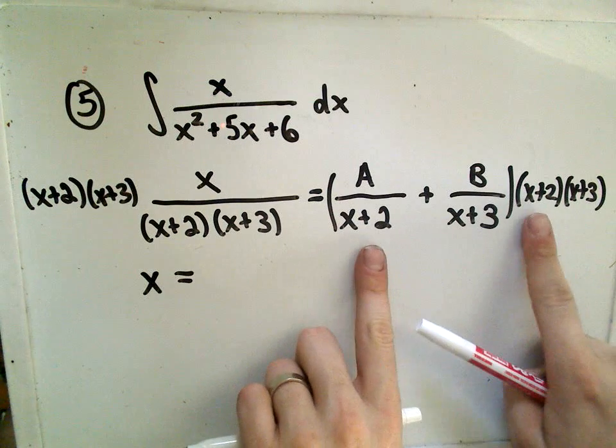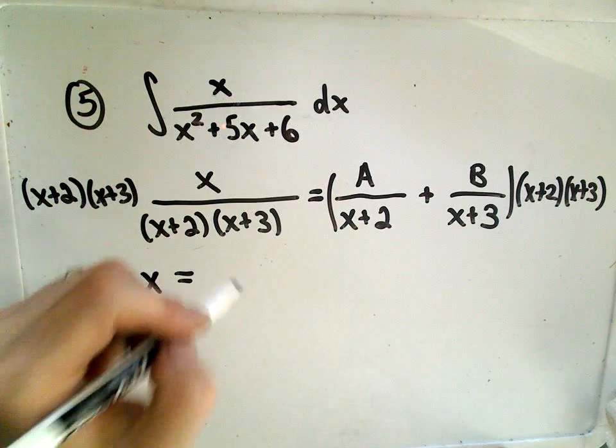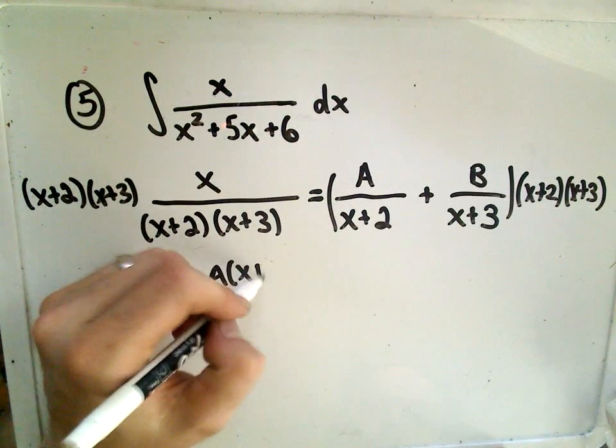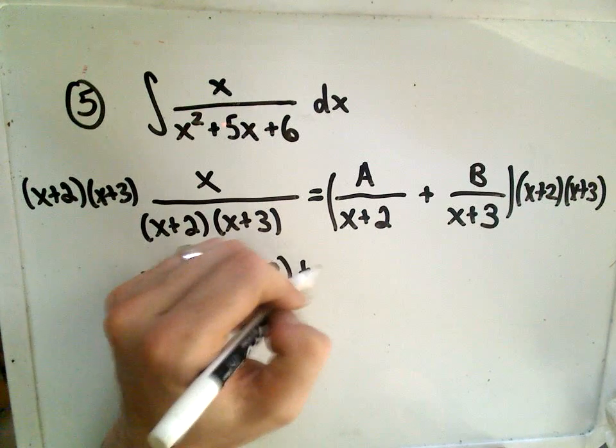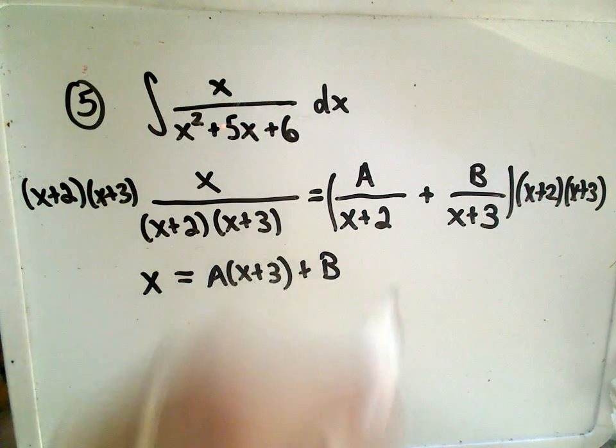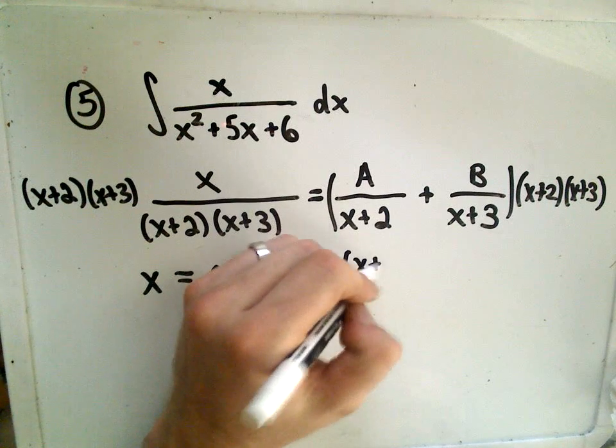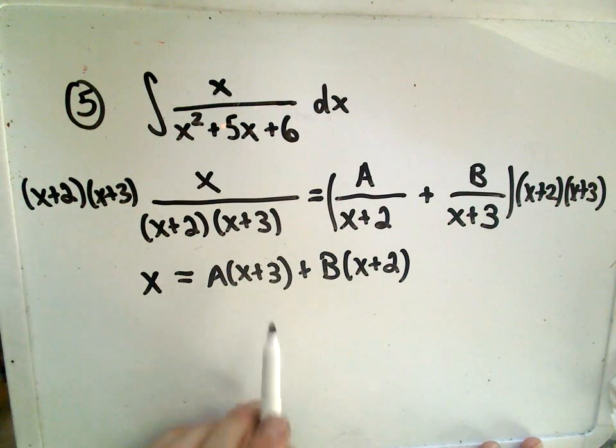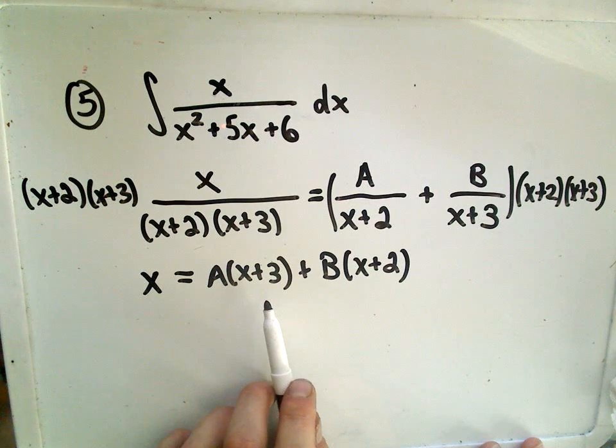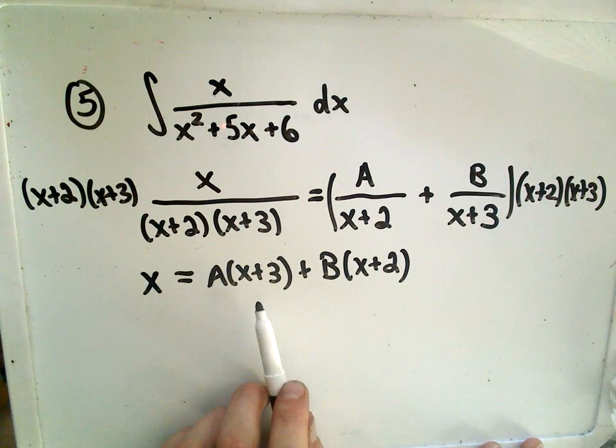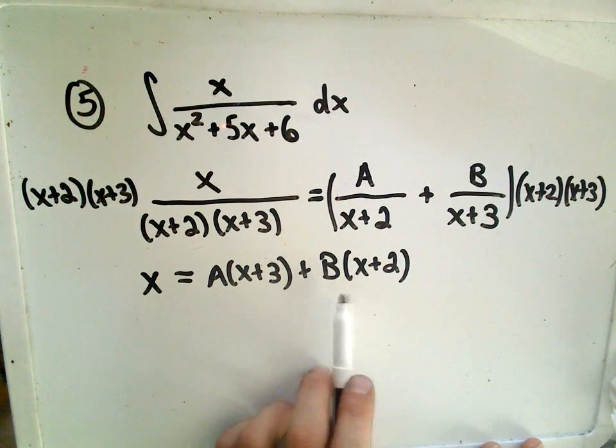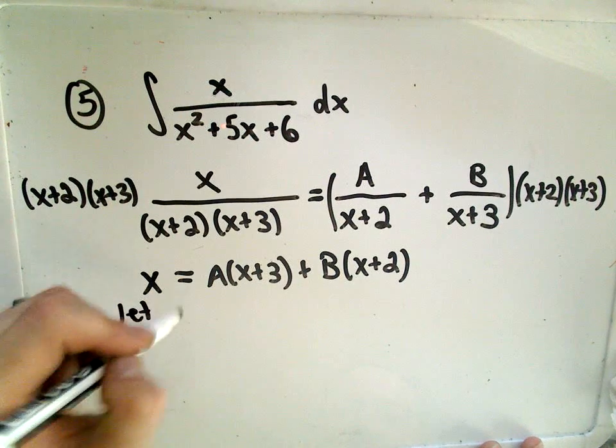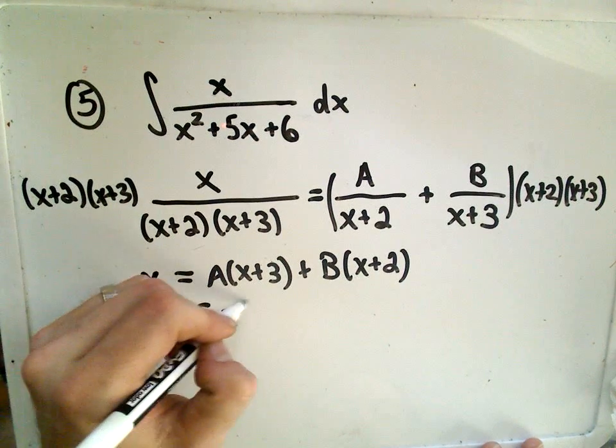On the right side, when I distribute, the x plus 2s will cancel out, so I'll have A times x plus 3. And then I'll have B, and when I multiply out, the x plus 3s will cancel, so I'll have B times x plus 2. We could do equating coefficients and all that, but there's a little trick where you try to pick clever values of x that will either make the A term disappear or the B term disappear.